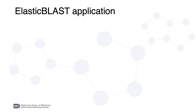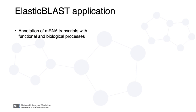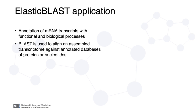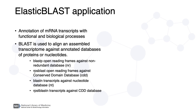I will provide an example of when Elastic Blast will be helpful. mRNA annotation with functional and biological processes is an important step in developing an understanding of the biological complexity of an organism. This process typically involves the integration of multiple biological databases and software tools. BLAST is used to align an assembled transcriptome against annotated databases of proteins or nucleotides. These alignments are the first step to identifying close and/or distant homologous genes, proteins, and functional domains to generate new annotations on the newly assembled transcriptome.